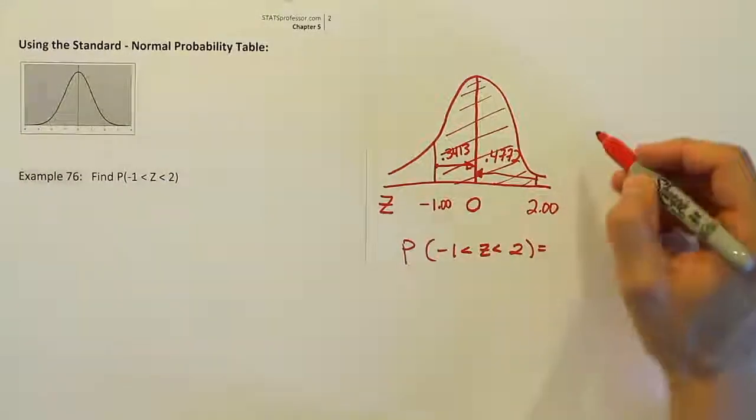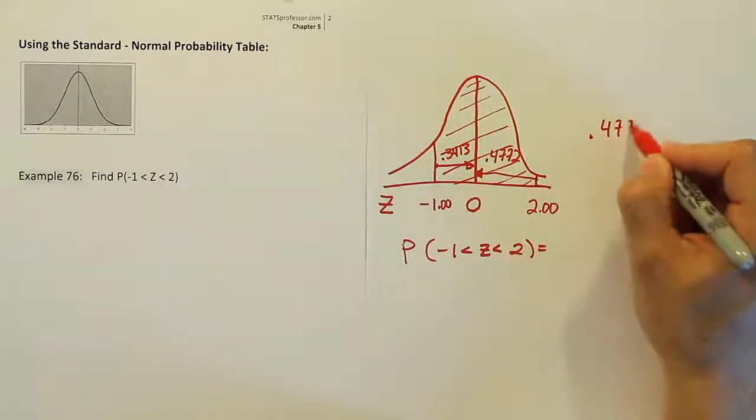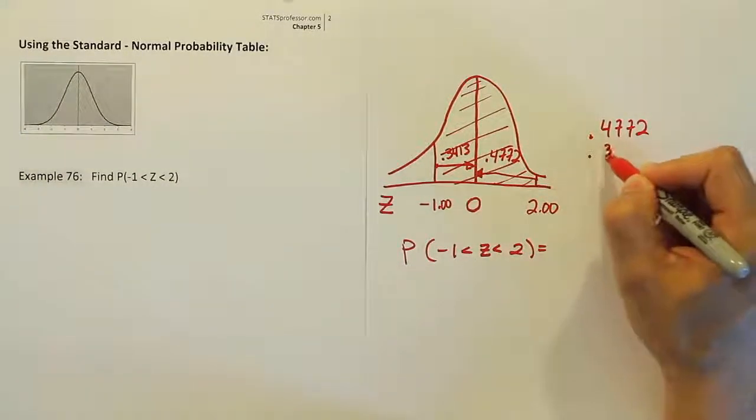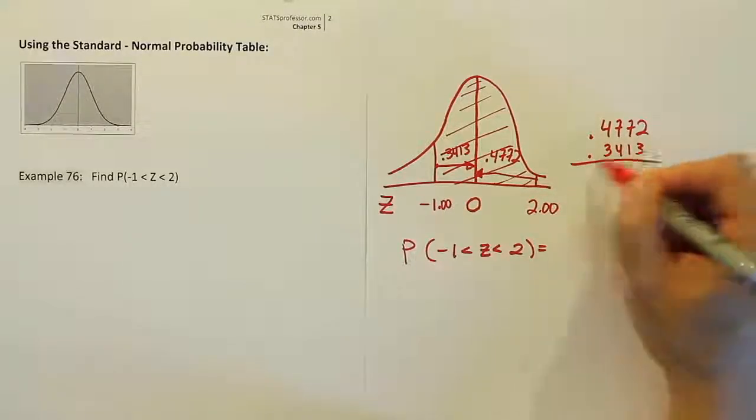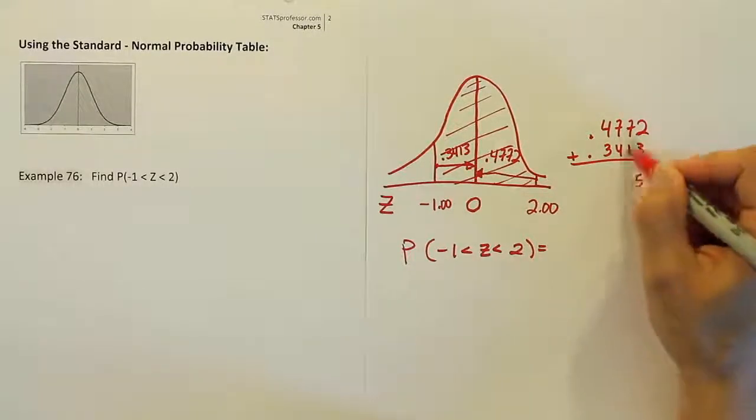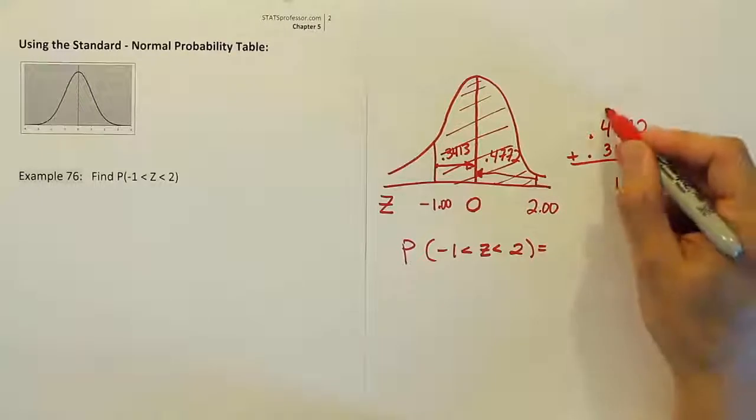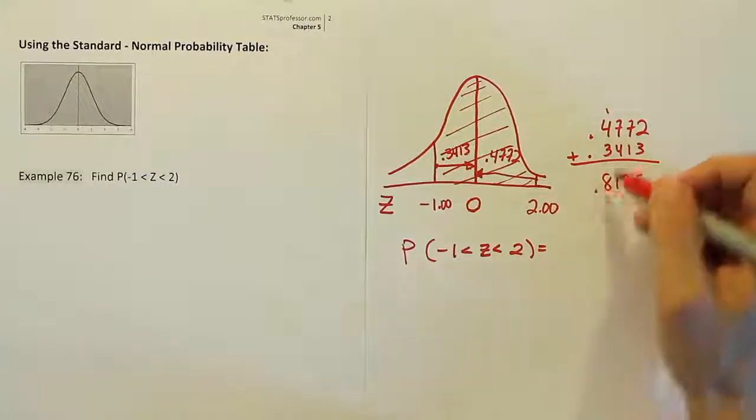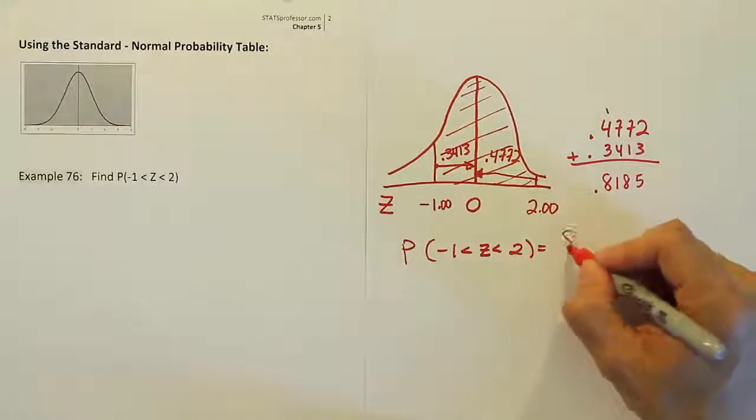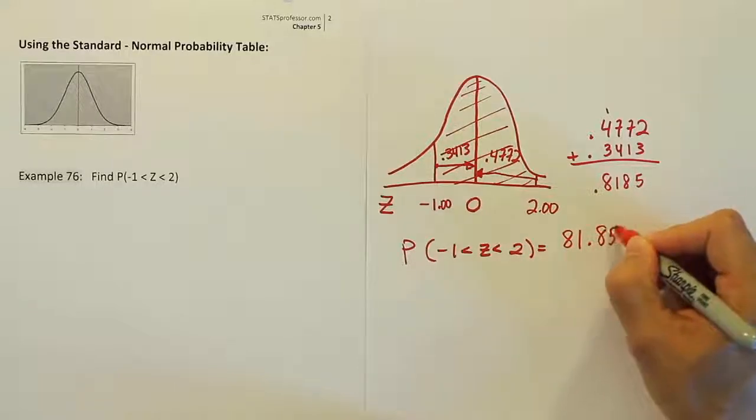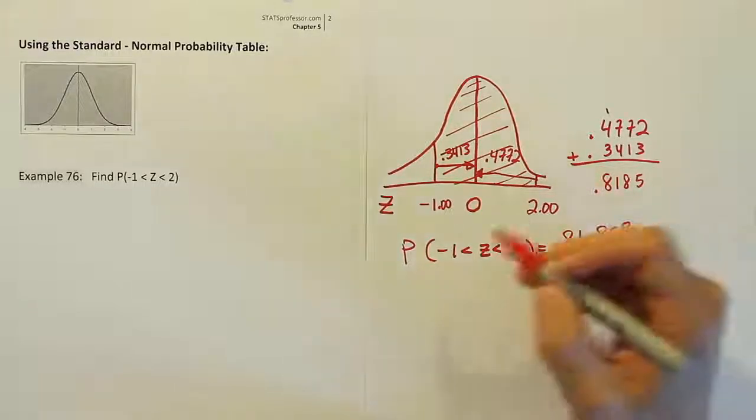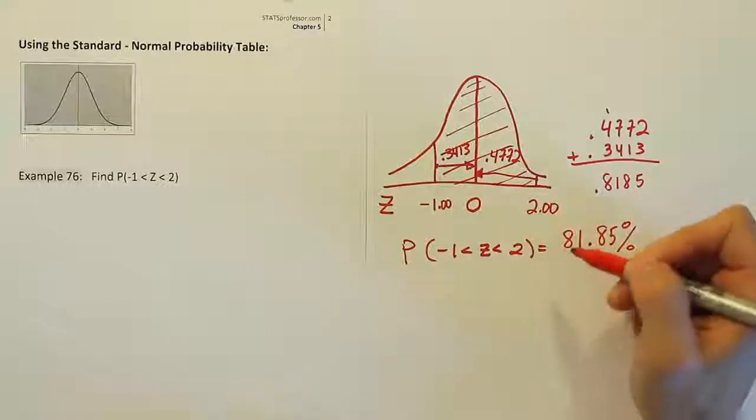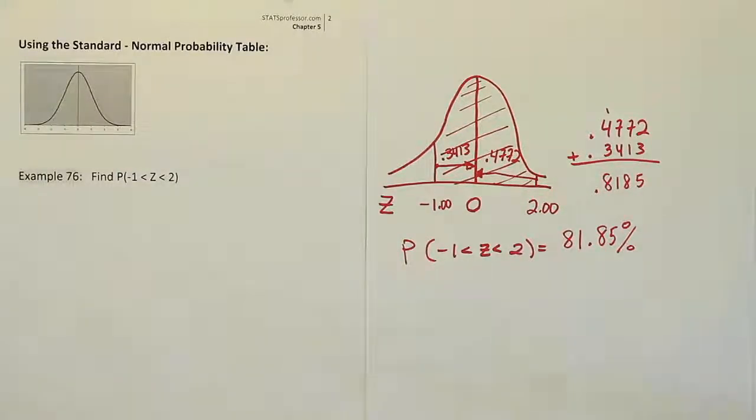If we put these two together, we'll have .4772 plus .3413. If I add them up, I get 5 and then 8 and then 11 and then 8. So we get 81.85 percent. 81.85 percent. And that is the area between negative 1 and 2 on the bell curve.